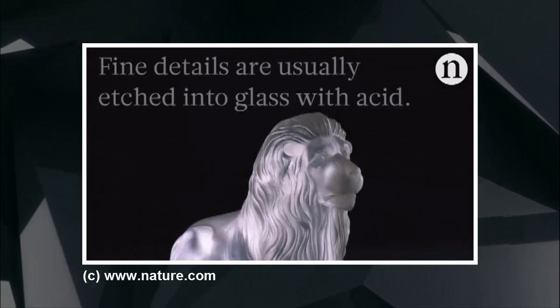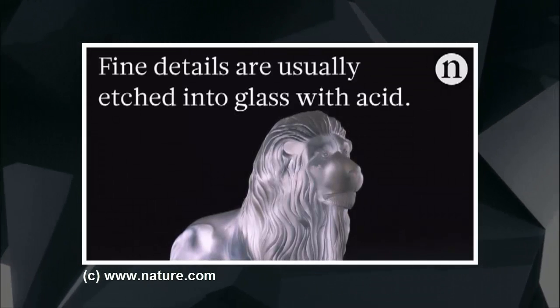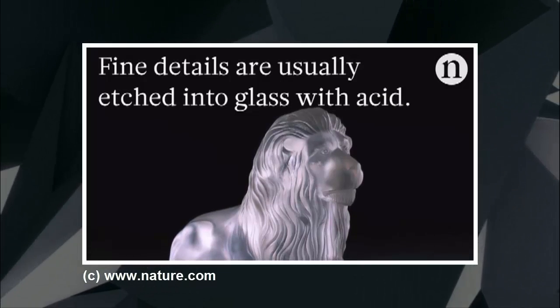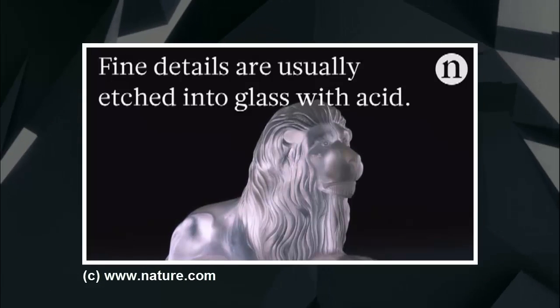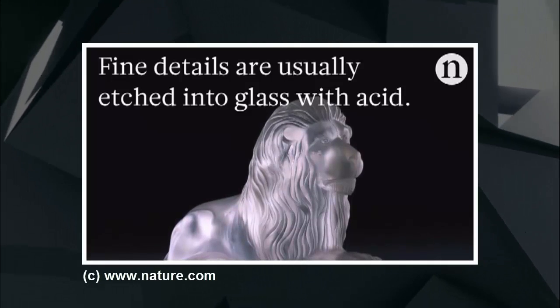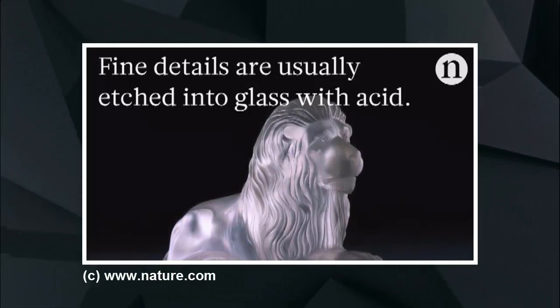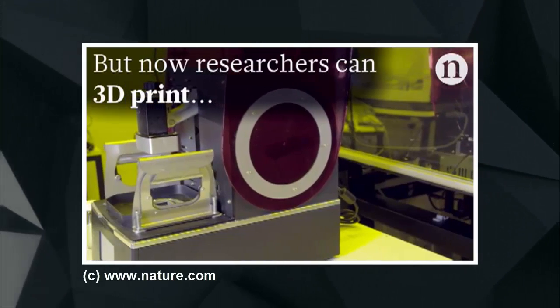Objects printed in 3D are normally made from polymers, but glass makes for an excellent printing material because it has unique optical and physical properties. The technique requires a fine glass powder suspended in a liquid and a standard 3D printer.